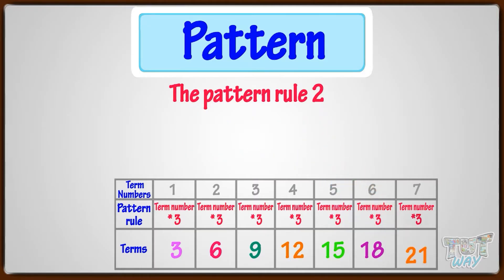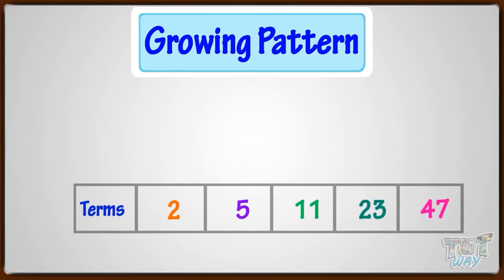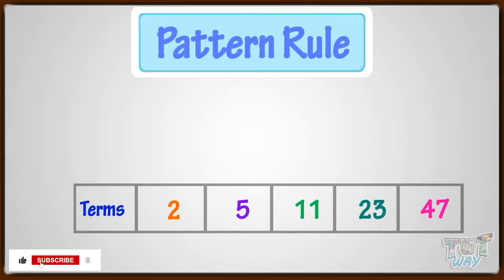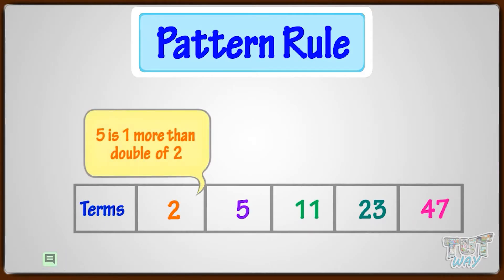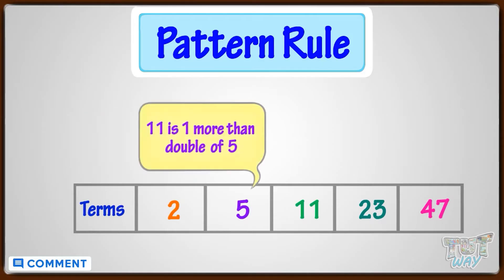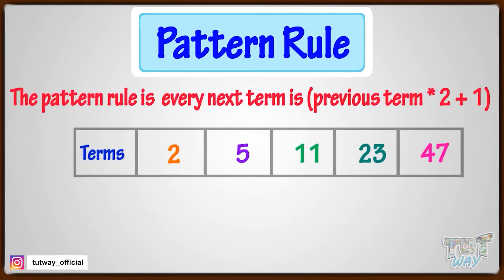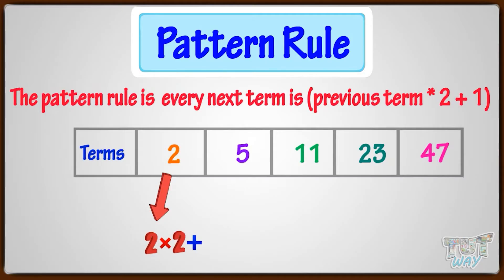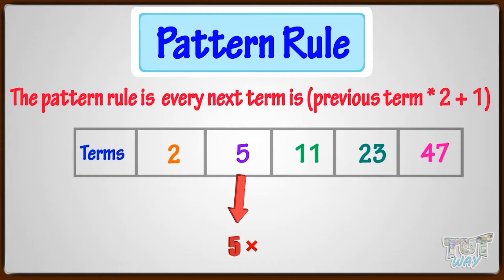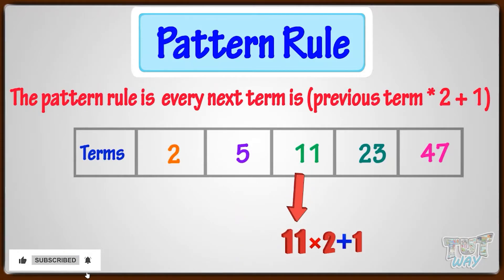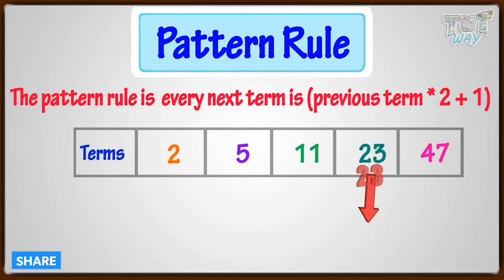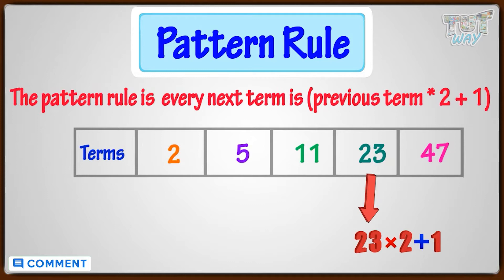Let's move to the next example. Here we have another growing pattern. Let's find out the pattern rule. 5 is 1 more than double of 2. 11 is 1 more than double of 5. So the pattern rule is: start at 2, multiply by 2, and add 1. 2 multiplied by 2 plus 1 gives 5. 5 multiplied by 2 plus 1 gives 11. 11 multiplied by 2 plus 1 gives 23. 23 multiplied by 2 plus 1 gives 47.